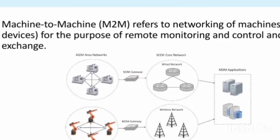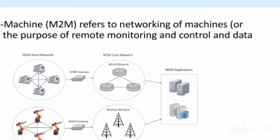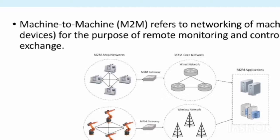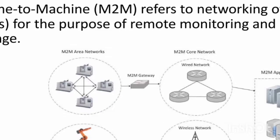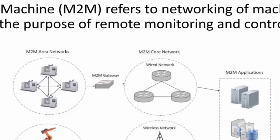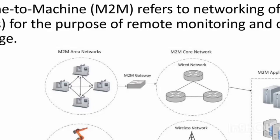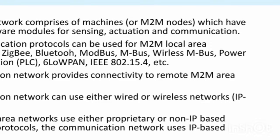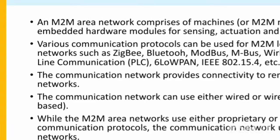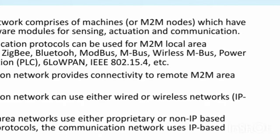Coming to M2M — M2M is machine-to-machine. Machine-to-machine refers to networking of machines for the purpose of remote monitoring and control, and data exchange. As seen in the diagram, different networks are involved. An M2M area network comprises of machines, also known as nodes, which have embedded software modules for sensing, actuation, and communication.